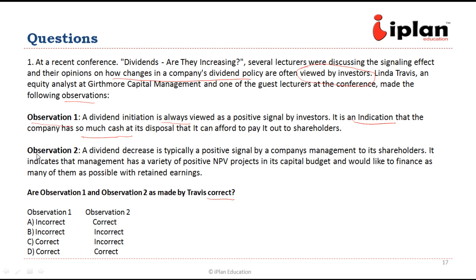Observation two states that a dividend decrease is typically a positive signal by company management to shareholders, indicating management has a variety of positive NPV projects in its capital budget and plans to finance them through retained earnings. It could be true in some cases, but we cannot say it is typically a positive signal because it depends on many other factors. A dividend decrease can also signal that the company does not have enough cash and is facing liquidity problems. So observation two is also incorrect. The right answer is B — both are incorrect.